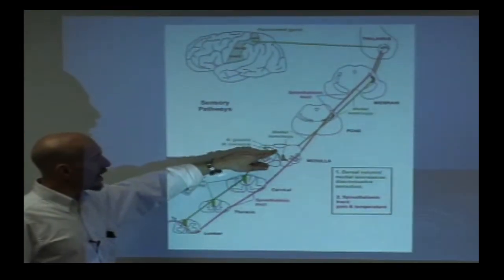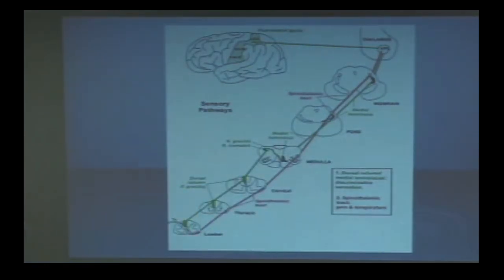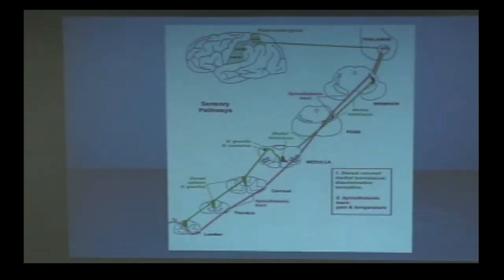The information crosses and then comes up through the medial lemniscus. People get scared when they hear that word—the lemniscus—like it's some brain thing. All lemniscus means is going to the thalamus. Whenever you hear that, it's just some pathway going to the thalamus.